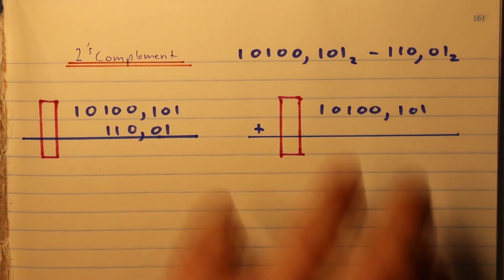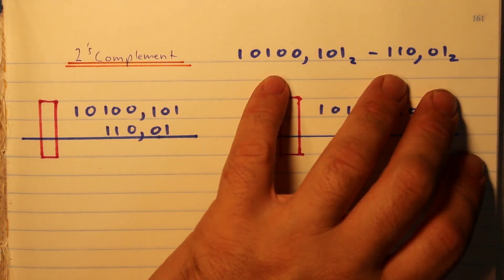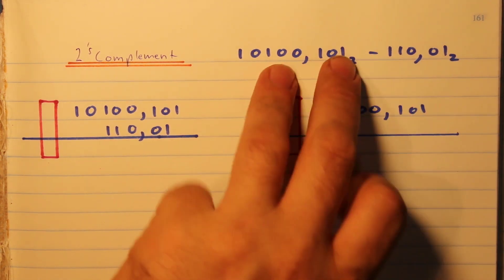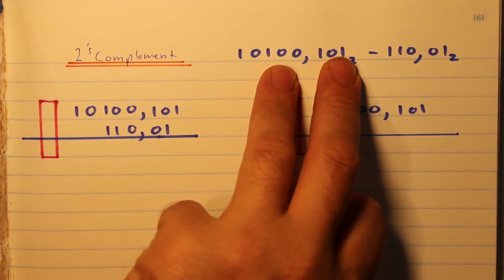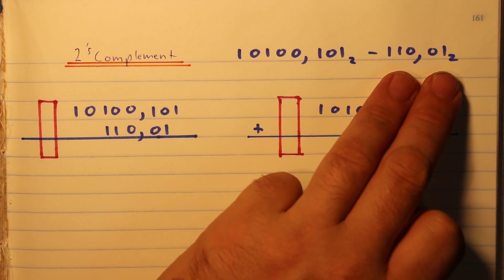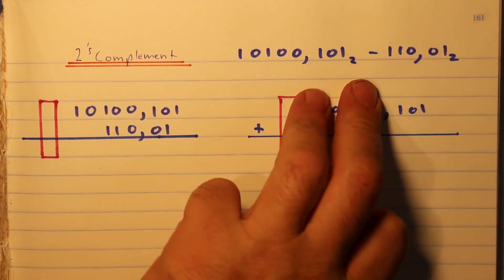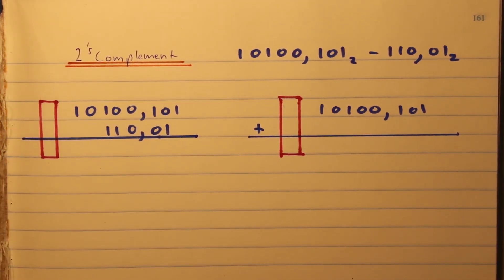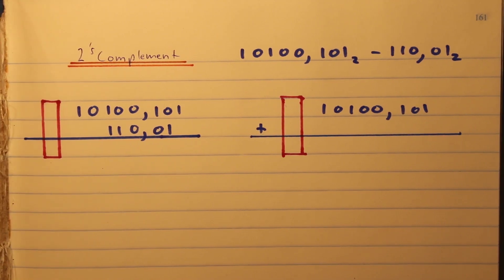So let's look at two's complement. We're going to look at a larger number getting subtracted by a smaller number, and then the answer we should expect to be positive — so a zero. You're going to see it's very similar to one's complement, just two small changes.